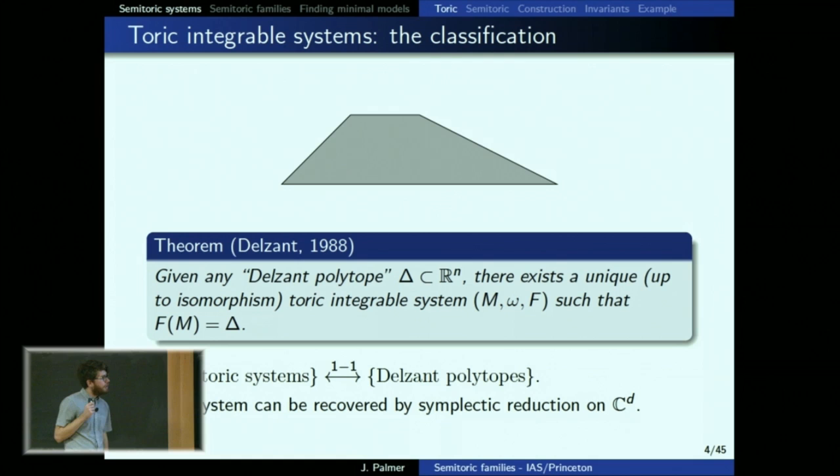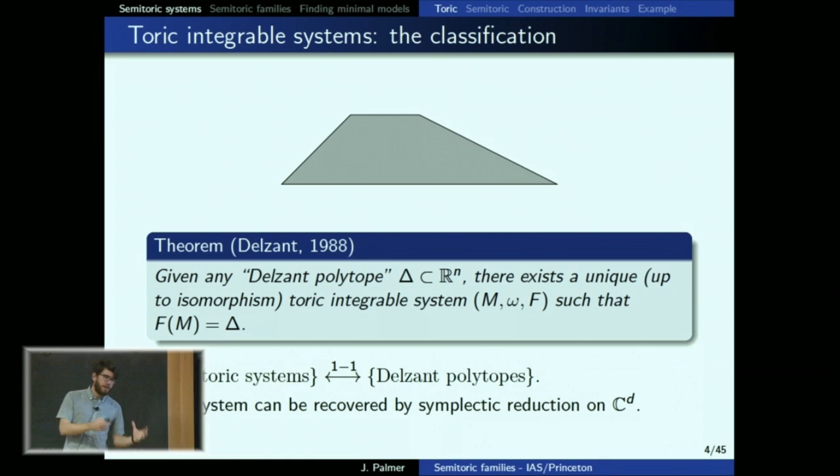If you look at Delzant's proof, he recovers the system by doing symplectic reduction on some power of C. You can go both ways in this bijection quite easily: from the toric system, you just look at the image of the momentum map; or from the polytope, you do some reduction controlled by the inwards-pointing normal vectors.